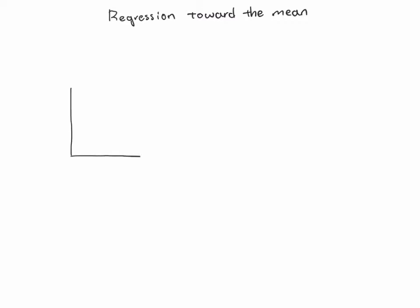In this video I want to talk about a concept called regression toward the mean. Suppose that we are doing a study — it doesn't really matter too much what the study is about — but let's suppose that we find some people who have very low IQ scores. We measure their IQ, they have these extremely low scores, and we would like to do something to help them out. We'd like to give them some kind of training to hopefully improve those scores. So we measure them at the beginning of our study.